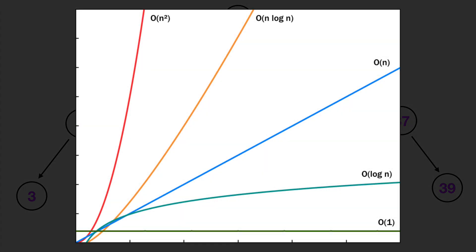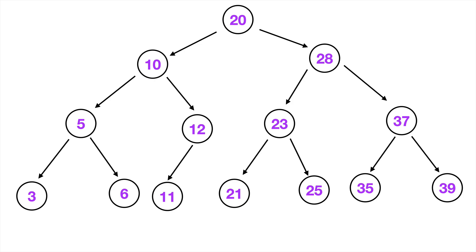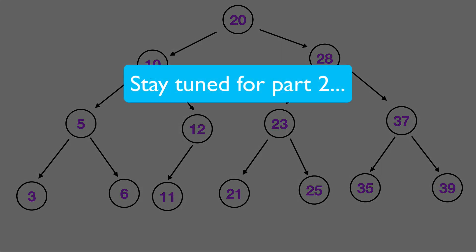In terms of big O notation, a binary search tree has a big O of O log N, so it is very good in terms of time complexity. As you can see from this chart, the time complexity of O log N is better than a linear time complexity. This is due to the fact that the binary search tree is sorted — greater values to the right and lesser values to the left. Thanks for checking out this video on binary search trees. If you liked the video, please give it a like and consider subscribing to the channel.